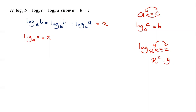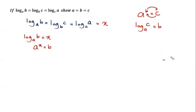Applying the same idea to log_a(b) = x: switching gives us a^x = b. You have to be master at changing log to indices and indices to log.